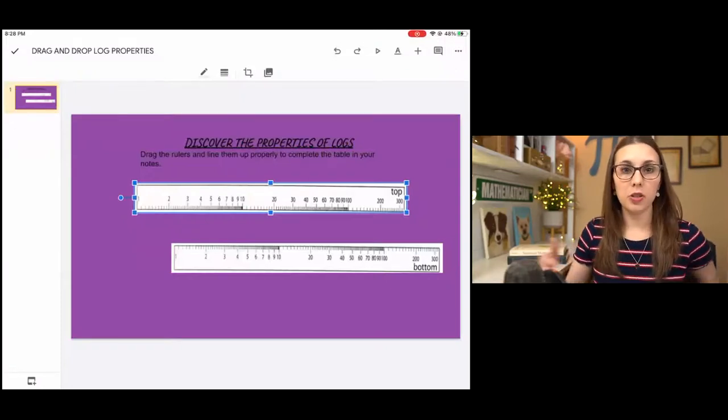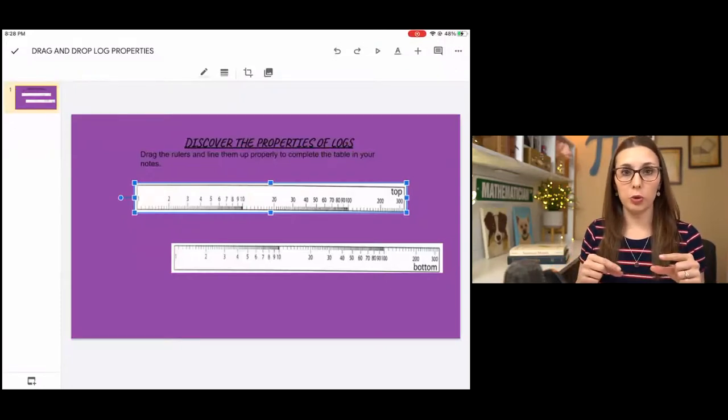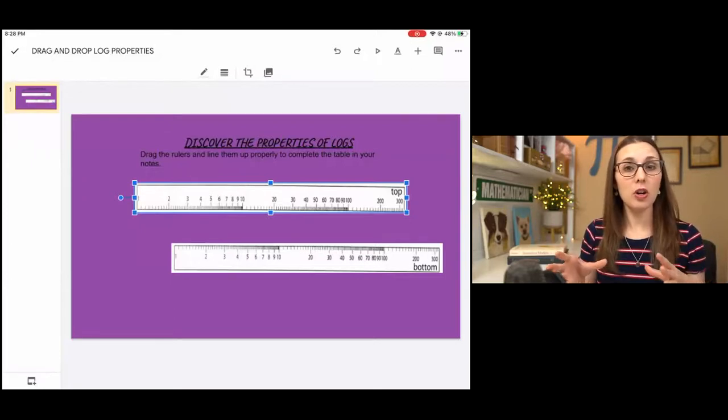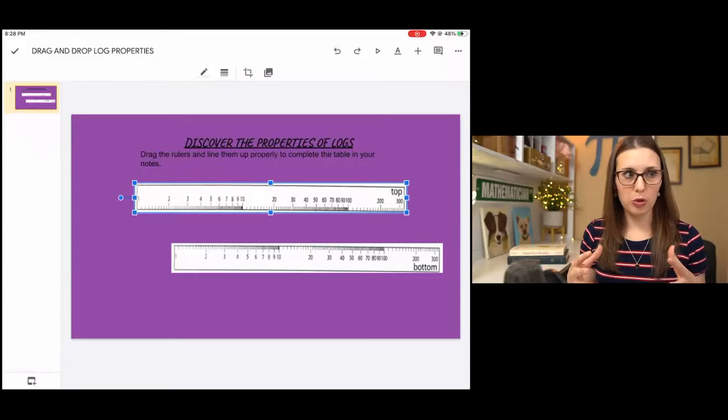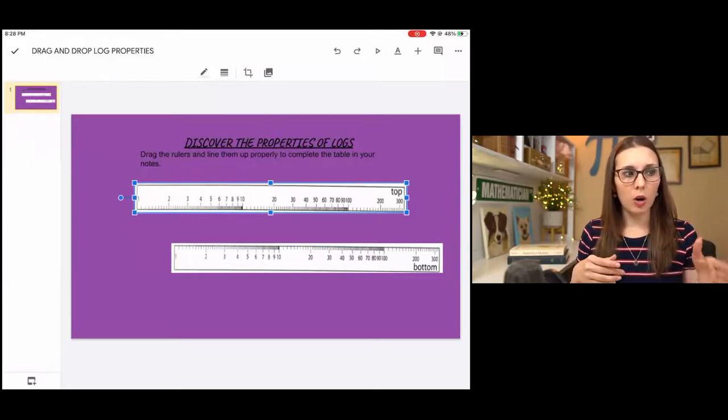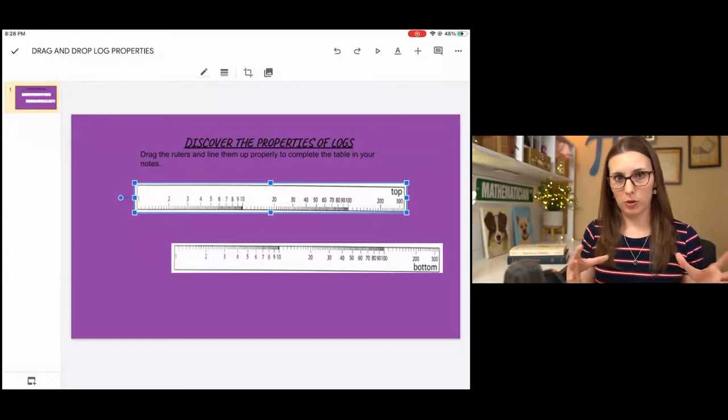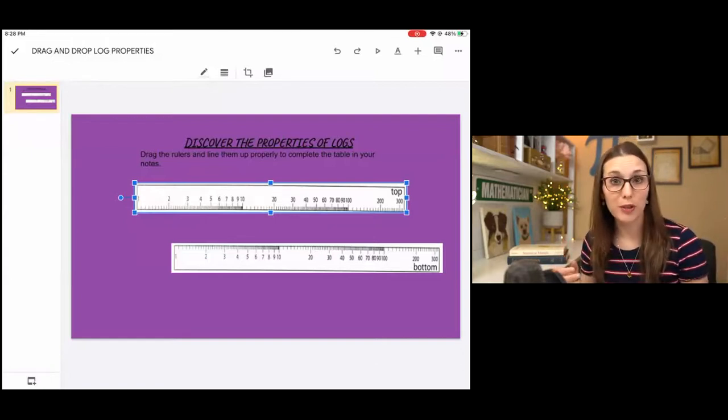On the screen, I have two different rulers here, and we're just doing basic addition, but these are logarithm rulers. The values that you see—log 1, log 2, log 3—those are actually based on real values, but they're just pre-done for you for the sake of the lesson.